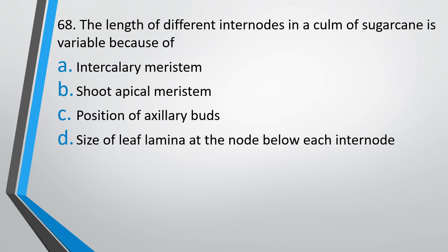Question number 68. The length of different internodes in a culm of sugarcane is variable due to intercalary meristem, shoot apical meristem, position of axillary bud, size of leaf lamina at the node below each internode. Correct answer is Option A, due to intercalary meristem.